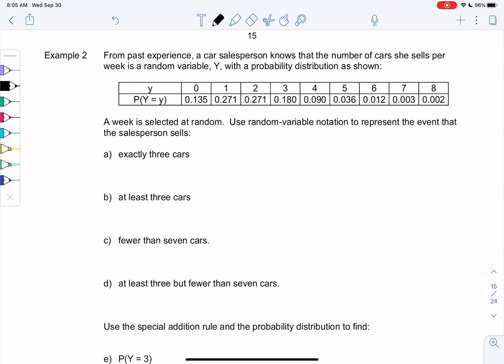Okay, we're in section 5-4 still. We're looking at random variables. So from past experience, a car salesman knows the number of cars she sells per week is a random variable. Basically, it's based on chance. And this is the distribution.